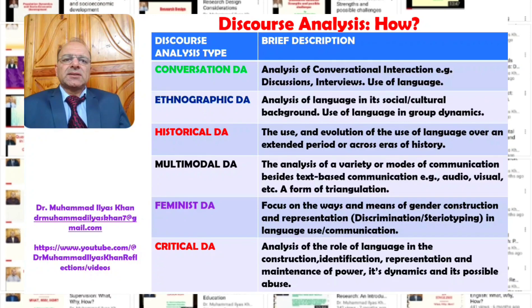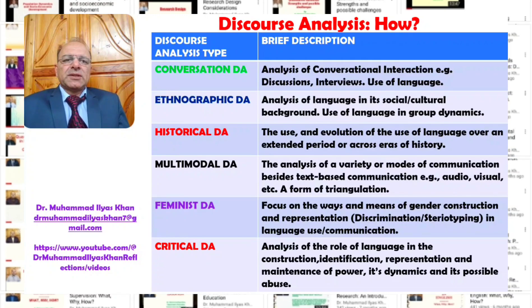The last two types fall under critical discourse analysis. The first is feminist discourse analysis, where the focus is on the ways and means of gender construction and representation. Researchers are looking for possible discrimination based on gender or gender stereotyping in language use and communication. This belongs to the critical discourse analysis approach mainly because of issues relating to social justice and to inclusion or exclusion — specifically, discrimination against the female gender in terms of their inclusion or exclusion in social, political, or economic discourses.